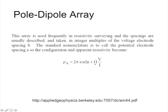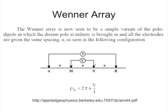You folks used a Wenner array, which is really the simplest variant of the pole-dipole, where the distant current pole at infinity is brought in and all the electrodes are given the same spacing A. The apparent resistivity is 2πA × V/I — one of the simpler formulas.